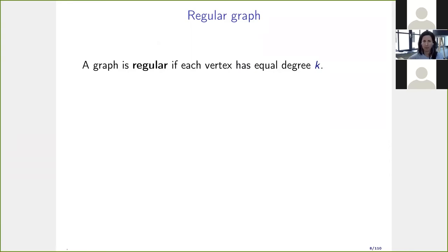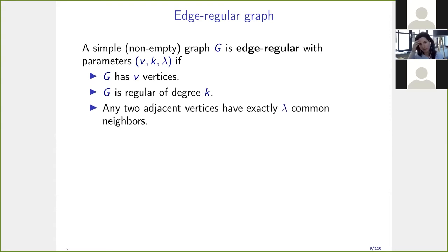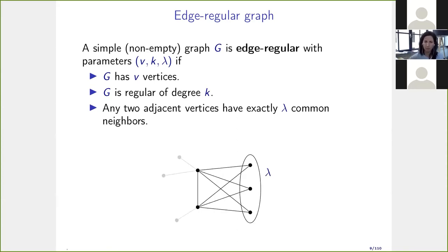Everybody probably knows what a regular graph is — every vertex has equal degree k. A less familiar concept is the edge-regular graph: we consider a simple non-empty graph and say it is edge-regular with triplet of parameters (v, k, λ) if the graph has v vertices, is regular of degree k, and any two adjacent vertices have exactly λ common neighbors.